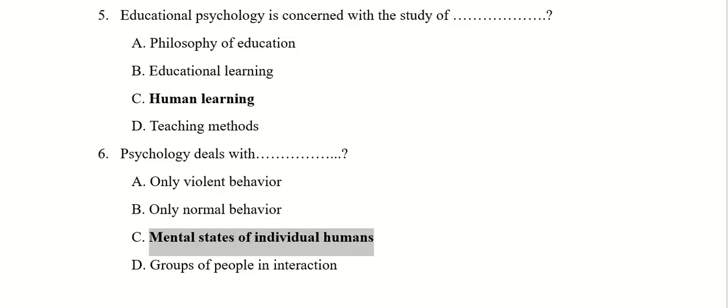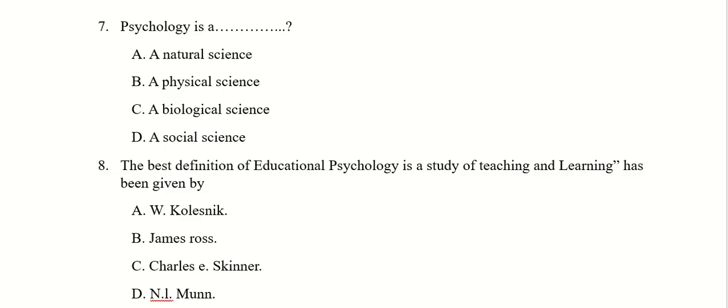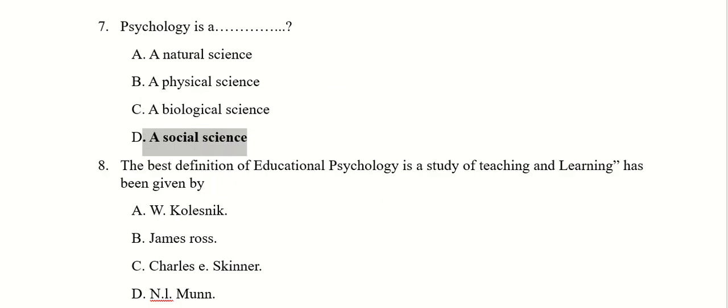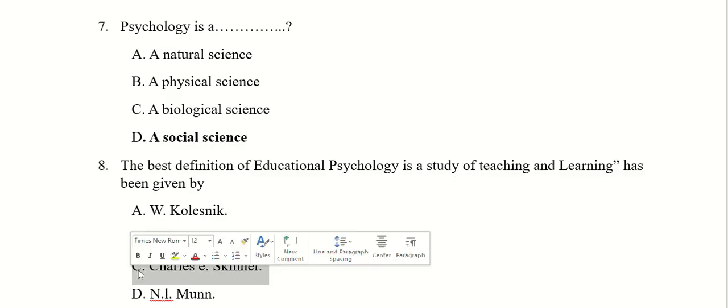Psychology is a natural science, physical science, biological science or social science. Right answer is D, social science. The best definition of educational psychology is a study of teaching and learning has been given by, you have four options. The right answer is C, Charles E. Skinner.